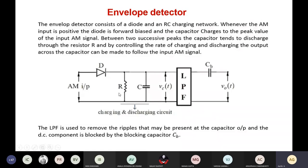Based on the resistance and capacitance values, the capacitor will be charging and discharging based on the input applied at the RC network. The envelope of the positive half will be almost recovered at the output of the capacitor — that is what we obtain at Vc(t). This is then given to a low pass filter, which removes the ripples. Other unwanted frequencies are removed, and any DC values are blocked by the DC blocking capacitor. Finally, we obtain the proper message signal — the recovered signal — at V₀(t).